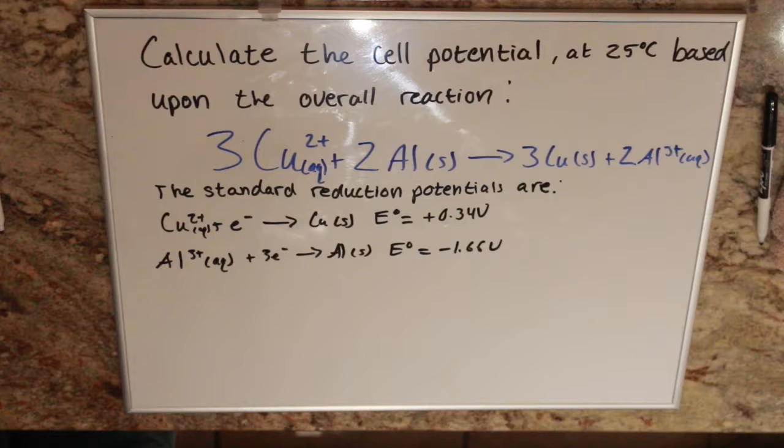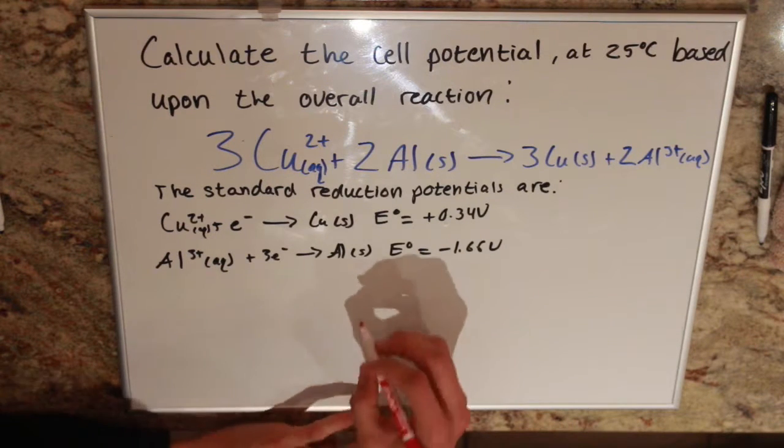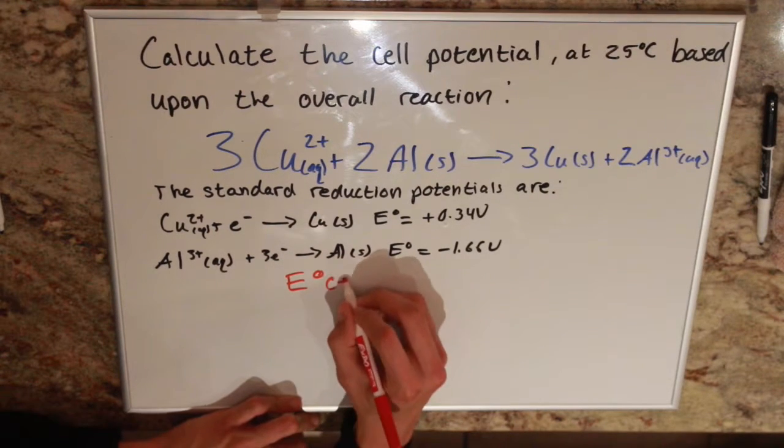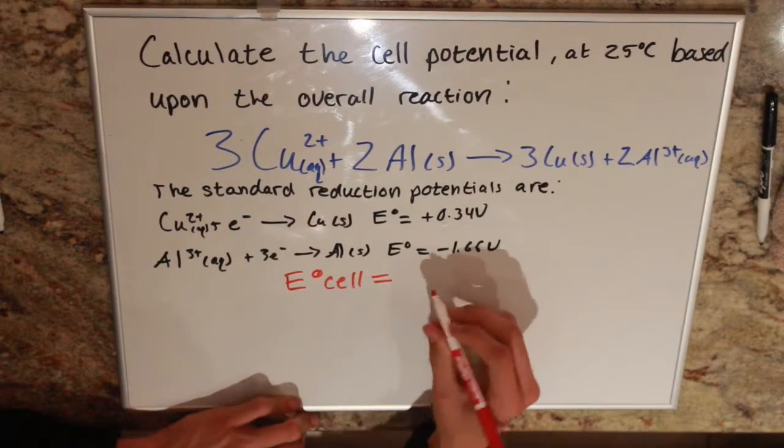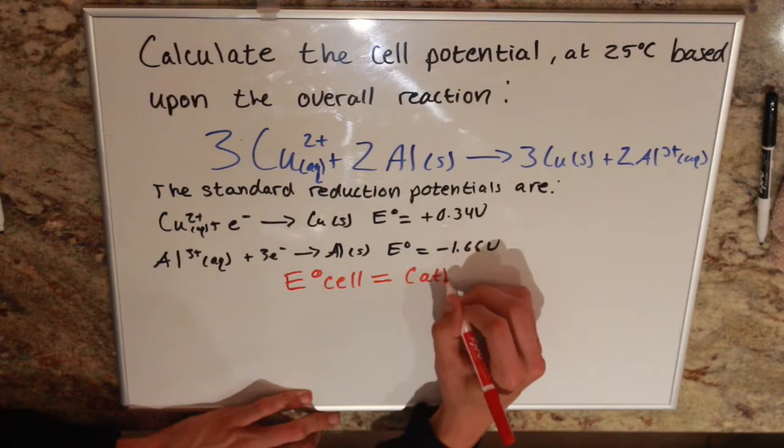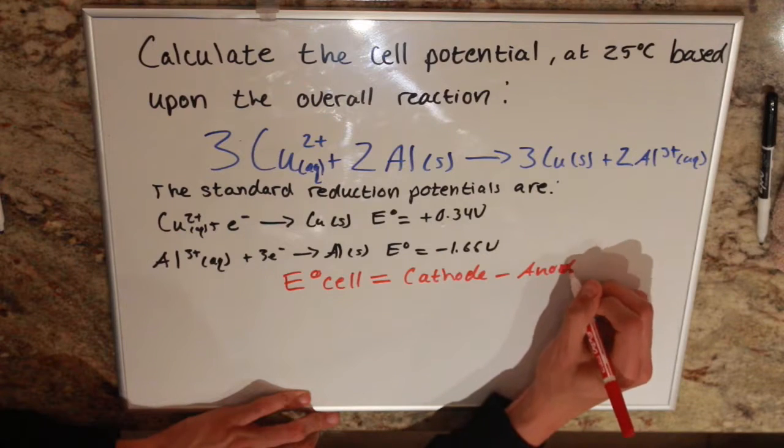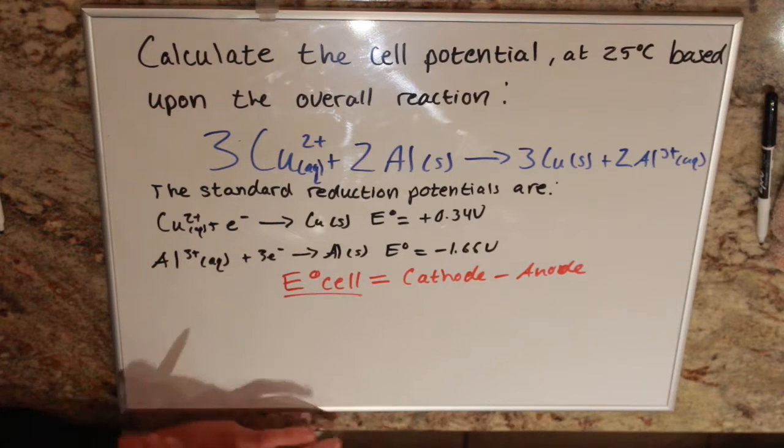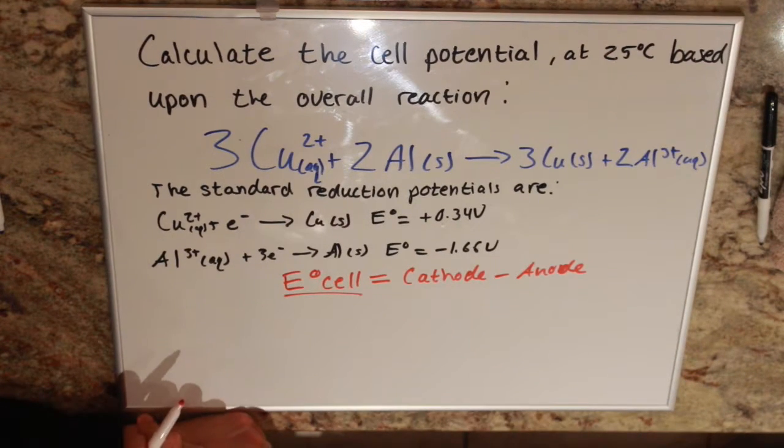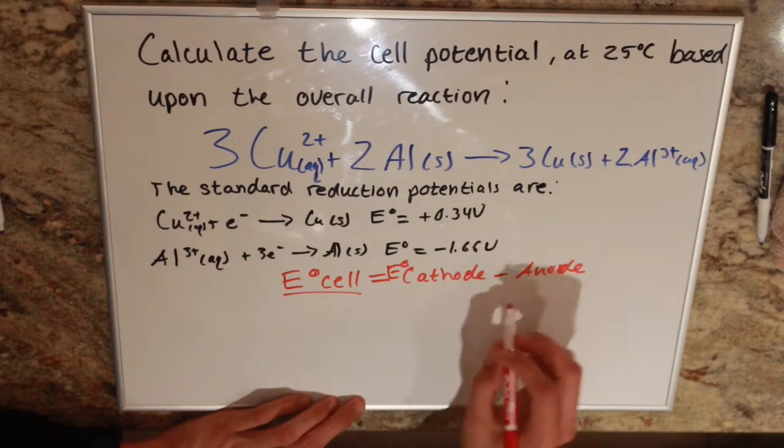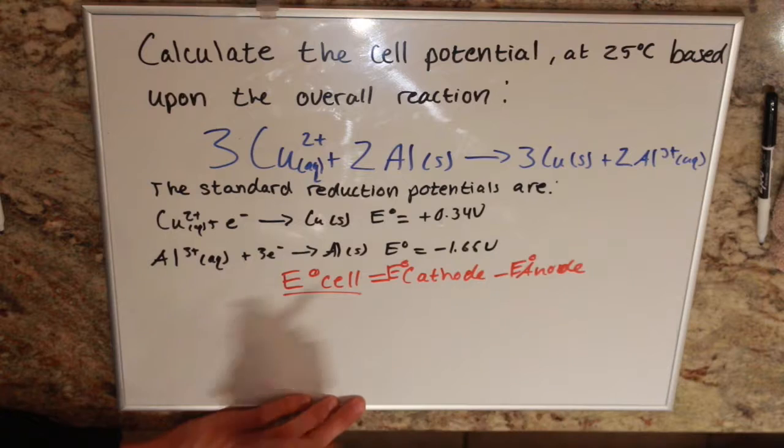The first step in the process is to find out what our cathode and our anode are, because our equation is: the cell potential equals the reduction potential of our cathode minus the reduction potential of our anode.